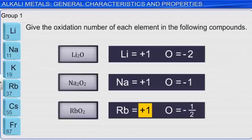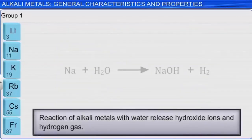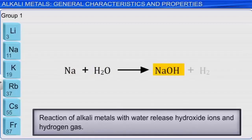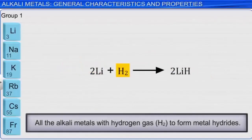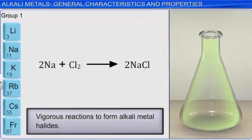The alkali metals all react with water, releasing hydroxide ions and hydrogen gas. These reactions become increasingly more explosive down the column. The alkali metals also all react with hydrogen to produce metal hydrides, which are ionic solids with high melting points. They react very vigorously with the halogens; one classic example is the formation of table salt, sodium chloride, from sodium metal and chlorine gas.